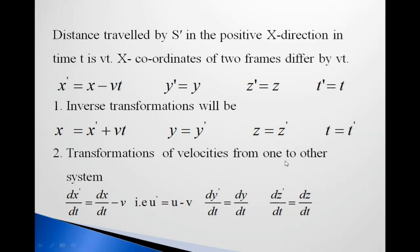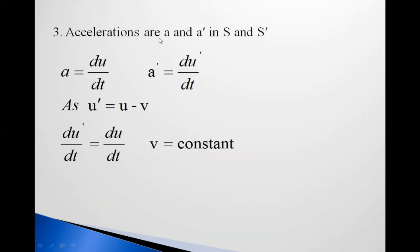For the transformation of velocities from one frame to another: dx dash/dt = dx/dt − v, which gives u dash = u − v. Also, dy dash/dt = dy/dt and dz dash/dt = dz/dt. For accelerations a and a dash in the S and S' frames: du dash/dt = du/dt, since v is constant. So the acceleration is the same in both frames.